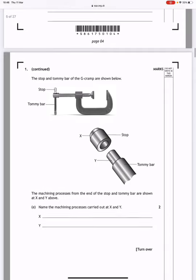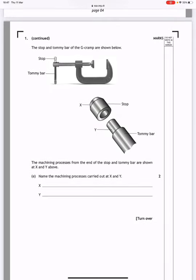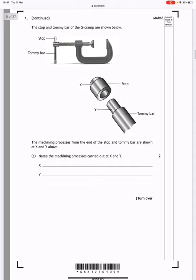Stop and tommy bar of the g-cramp are shown below. The machine processes used at the end of the stop and tommy bar are shown at X and Y. Name the machining process carried out at X and Y. X would be taper turning and Y would be parallel turning.